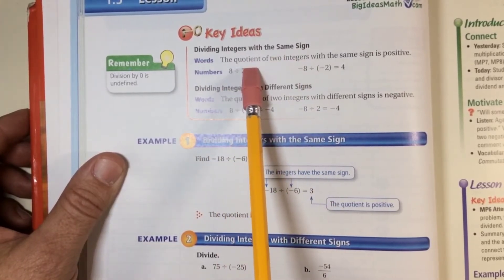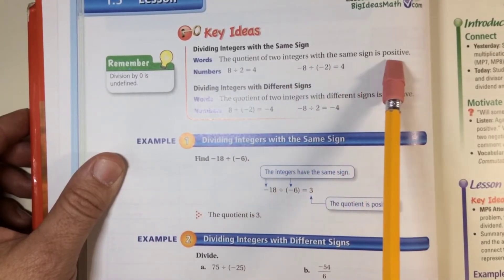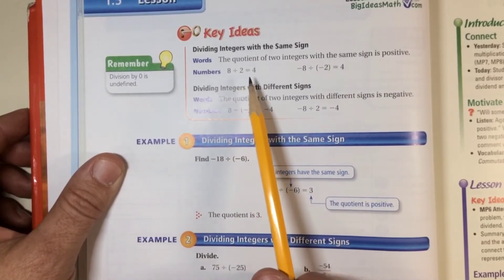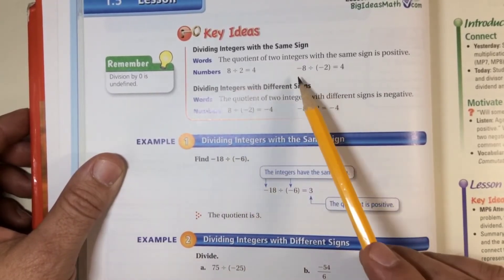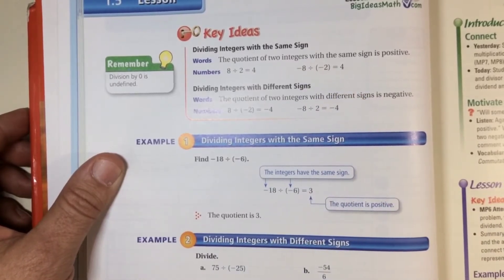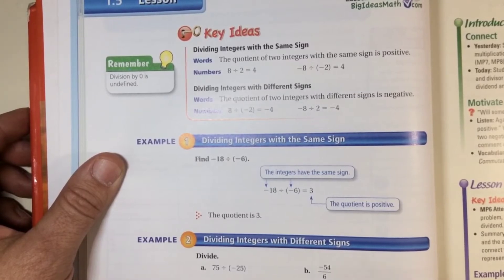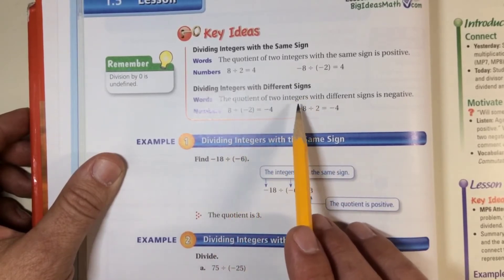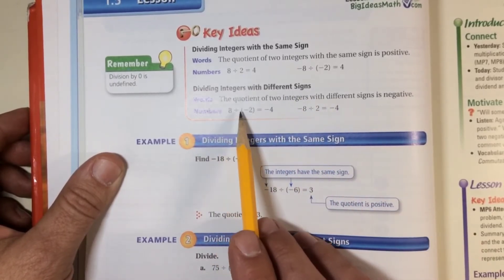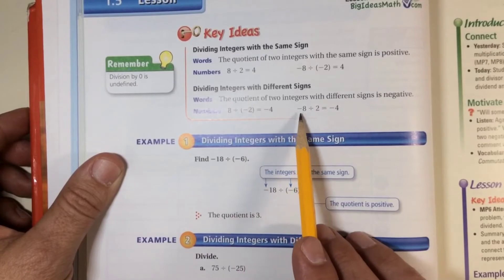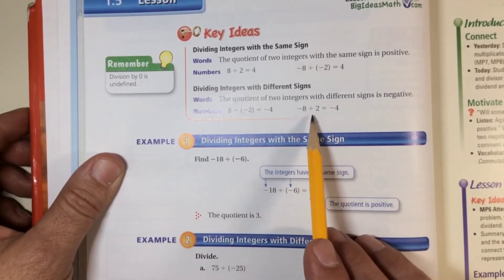Eight divided by two equals four — notice they're both positive, so my answer is positive. Negative eight divided by negative two equals four — same sign, positive. So when multiplying or dividing, same sign gives positive and different sign gives negative. Dividing integers with different signs: the quotient of two integers with different signs is negative. Eight divided by negative two gives negative four; negative eight divided by two also gives negative four.